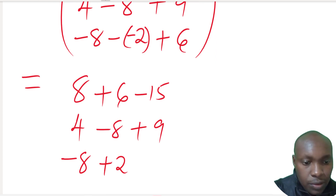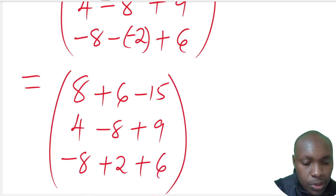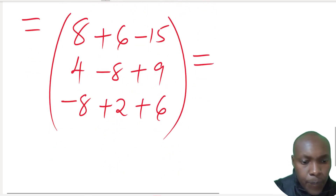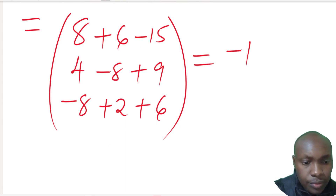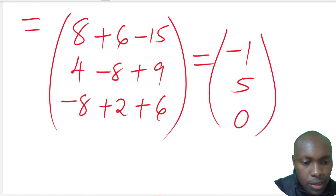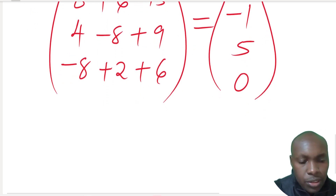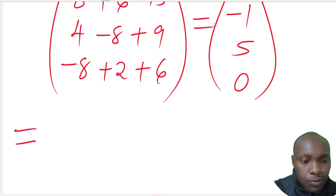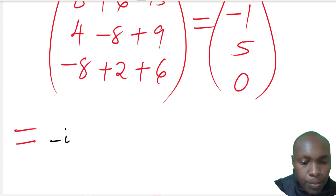Computing each row: the first row gives 8 + 6 - 15 = 14 - 15 = -1. The second row: add first, then subtract — 4 + 9 - 8 = 5. The third row: -8 + 2 + 6 = 0. So p = (-1, 5, 0), which in vector form is -i + 5j + 0k.